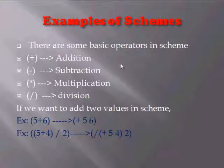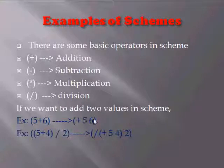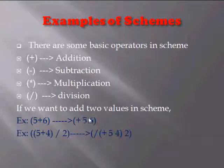The basic operators in Scheme are addition, subtraction, multiplication, and division. For example, the simple addition of 5 and 6 is written in Scheme as (+ 5 6), where the operator is put first and the two values follow. The operator plus is placed first, and 5 and 6 are placed after, which implies that 5 will be added to 6.